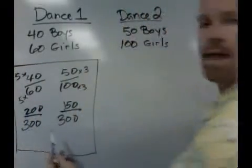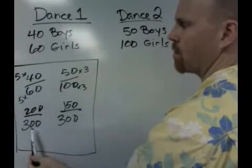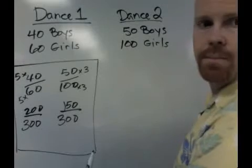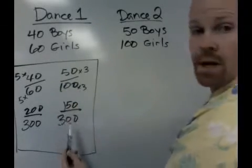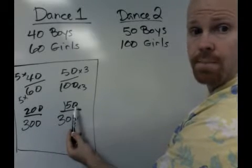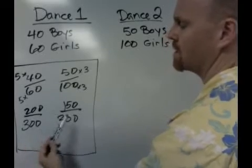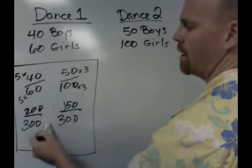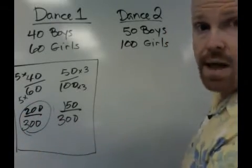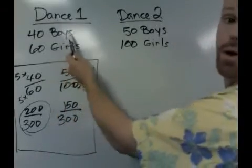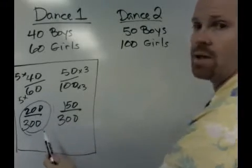So by finding a common denominator, we see that at this rate — 40 to 60 — if 300 girls showed up, then 200 boys would show up. And over here, at the ratio 50 to 100, if 300 girls show up, 150 boys will show up. So we can see by comparing with common denominators that dance 1 actually had a higher rate of participation of the boys than dance 2. Even though the number of boys went up, the rate of participation dropped.